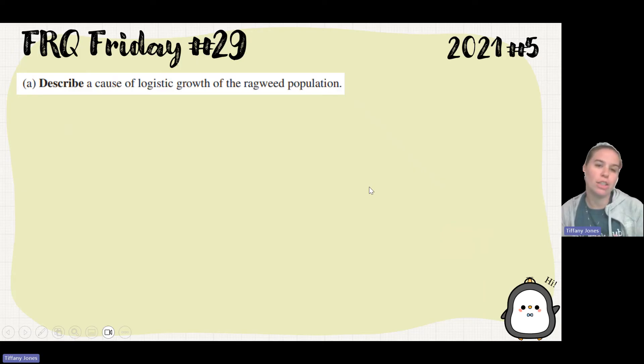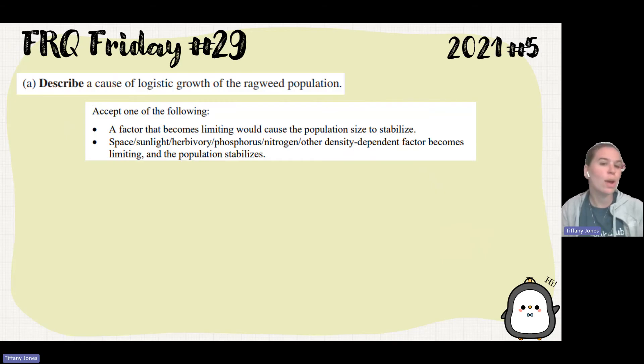Part A asks us to describe a cause of logistic growth of the ragweed population. Logistic growth is where we see carrying capacity, that S-shaped curve, versus exponential growth which is that J-shaped curve that just keeps growing. The thing we see with logistic growth is carrying capacity. So there must be some resource that's limiting, whether it's space, sunlight, or something else, that allows the population to level off at that carrying capacity.